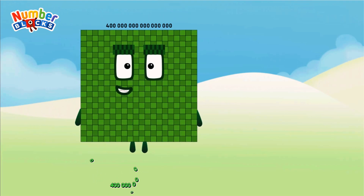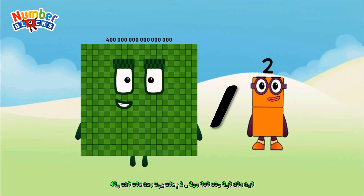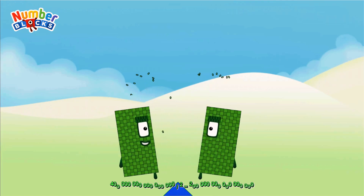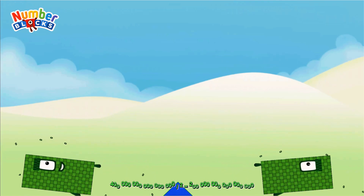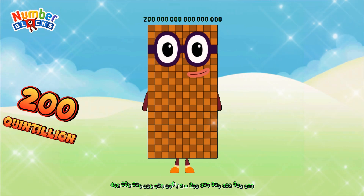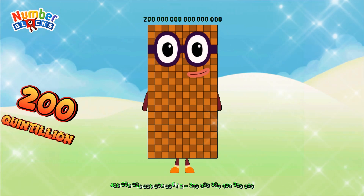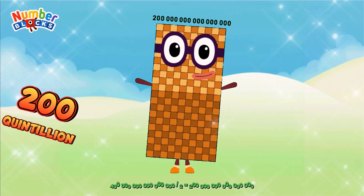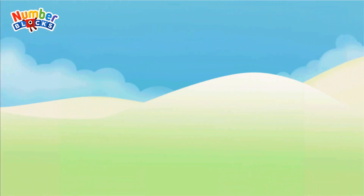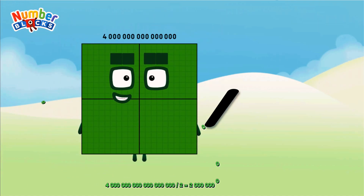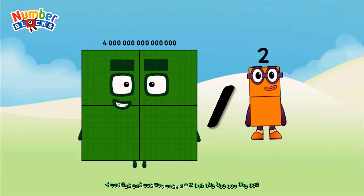400 quadrillion divided by 2 equals 200 quadrillion.